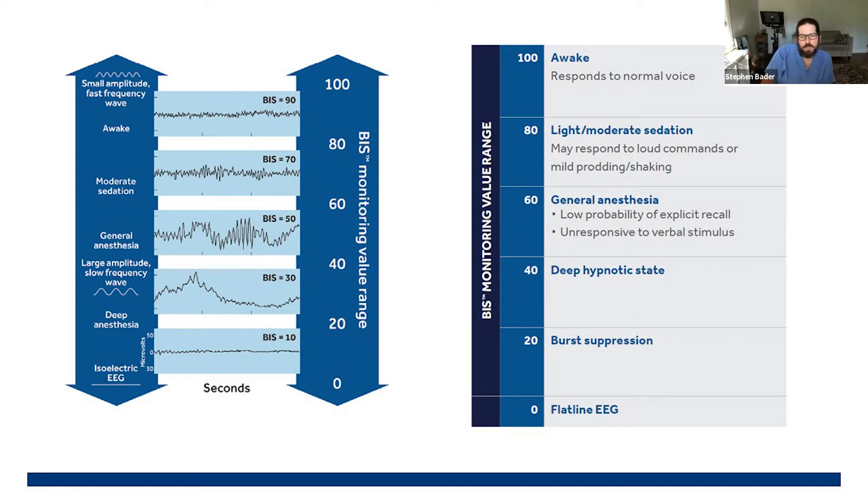So the BIS monitor presents us with a value between zero and 100. And the way to conceptualize that is that zero would be somebody with zero electrical brain activity. So an isoelectric EEG representing essentially a completely metabolically inactive brain or brain death.